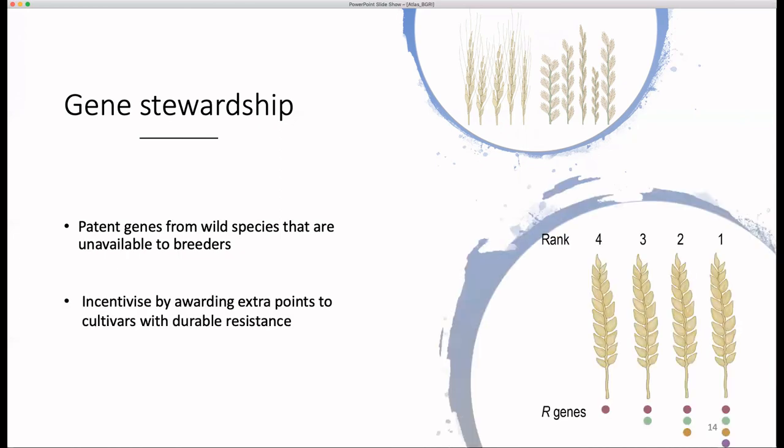Another option is to try to integrate stewardship practices into existing cultivar release procedures in different countries. It would be difficult to actually enforce good gene stewardship, but breeding for more durable multi-gene resistance could be incentivized by awarding these varieties with extra points so that their release is more likely over other varieties.